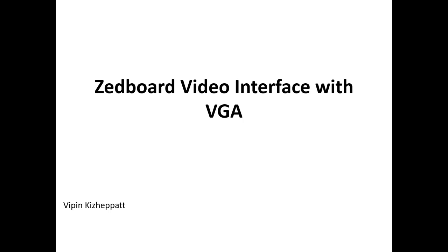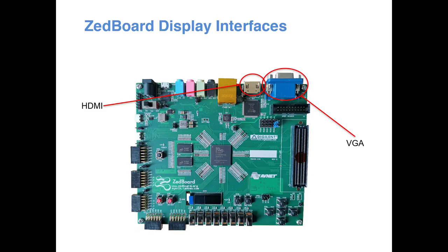Hello all! As mentioned in the previous tutorial, we are now trying to interface our Z-Bot with an external display. We will be using the VGA interface of Z-Bot to achieve it. Z-Bot has two video interfaces: a VGA interface, which stands for Video Graphics Array and is an analog interface, and an HDMI interface, High Definition Multimedia Interface.